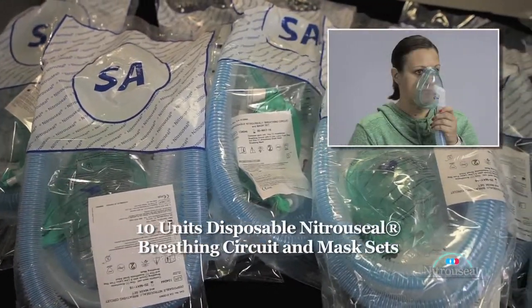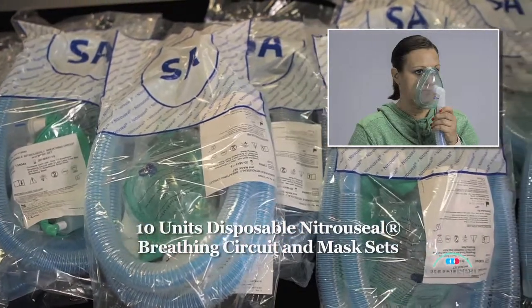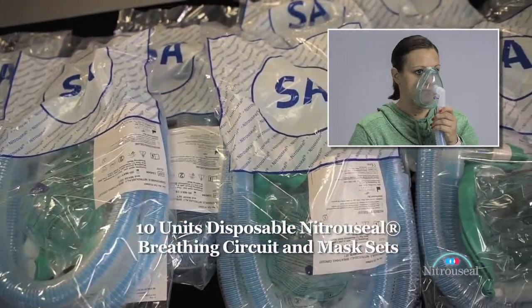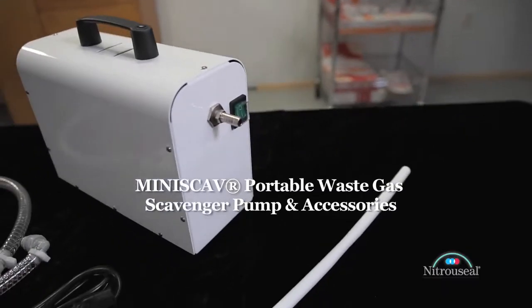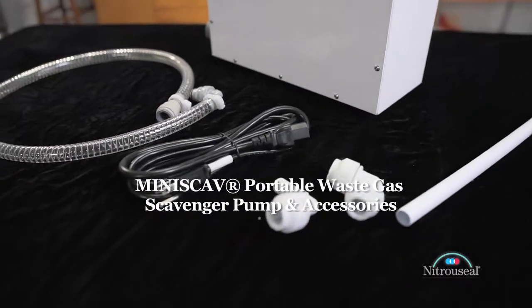The medium-sized box contains an initial supply of 10 units of disposable single-use NitroSeal breathing circuit and mask sets. The smallest box contains the Mini Scav portable waste gas scavenger pump with its associated accessories.